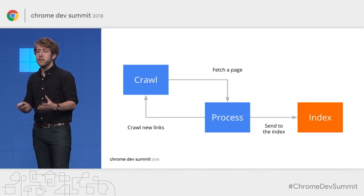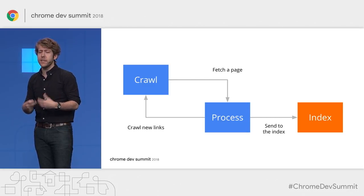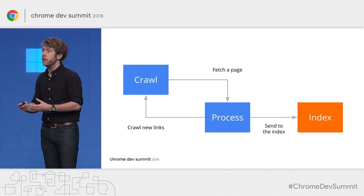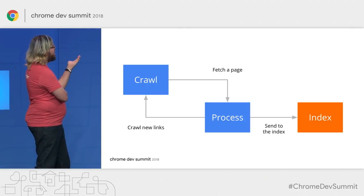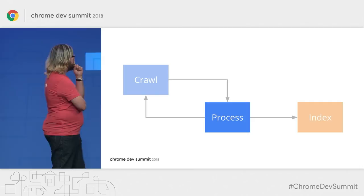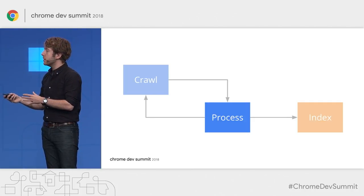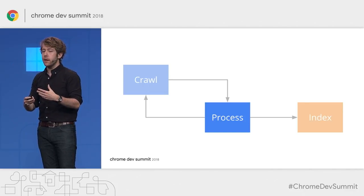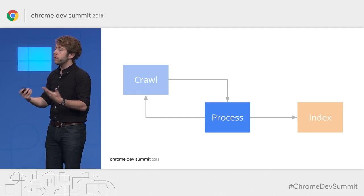Here's a basic diagram of how websites were traditionally indexed. Google's search crawler found pages, downloaded them, and processed that content, then put them into an index, and then performed more crawling based on the links it found. In the processing step, that's where the magic is. When we fetched a web page from a URL and it was a traditional website, that web page was complete when it arrived. We call this the rendering of the page, or the construction of the HTML.